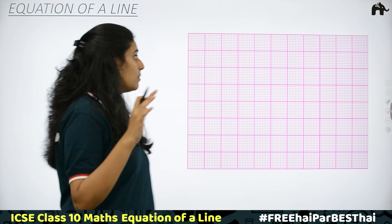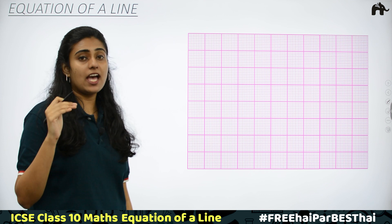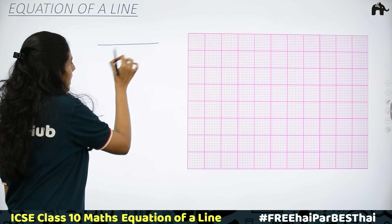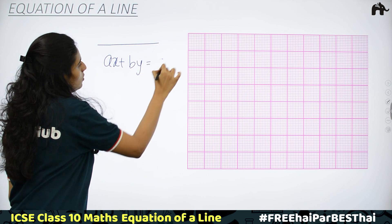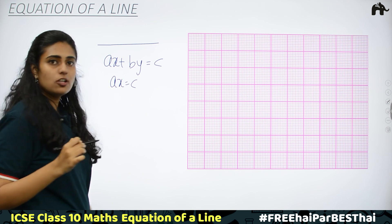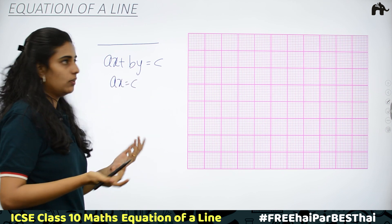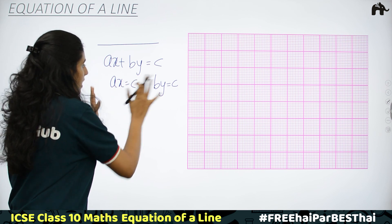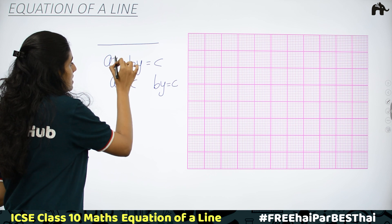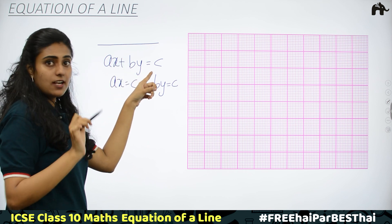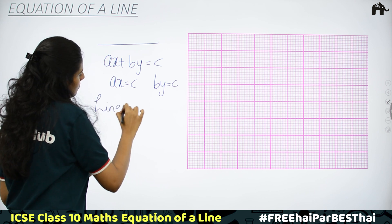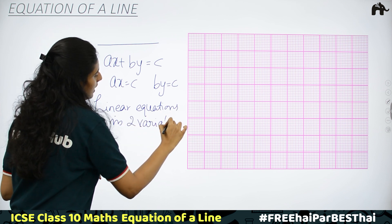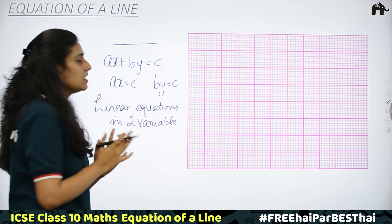Let us understand the basic concepts about a straight line. What is the equation of a line? In class 9th, we discussed in the chapter of graphs, equations of line. We have studied AX plus BY is equal to C, or AX is equal to C. This is also an acceptable equation of a line. These are linear equations in two variables, because the highest power of the variables X and Y is 1. Therefore, for a straight line, we have linear equations in two variables.